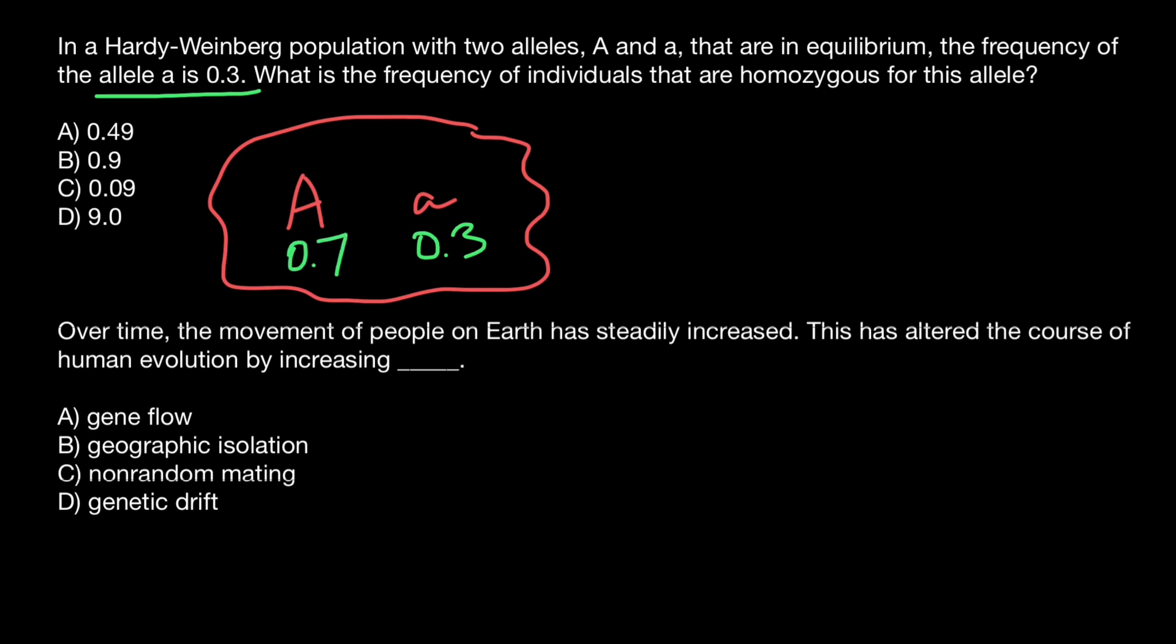So together, they make 100%. Now the question, what is the probability that if we randomly choose one allele, it's going to be recessive allele a? Frequency of this allele in a gene pool directly correlates with probability, and the probability is 0.3. And what is the probability that the second time we also choose recessive allele a?